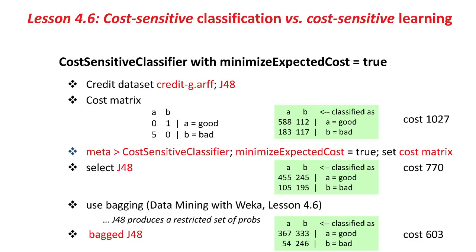Actually, J48 is not very good at producing probabilities, and it's advantageous to use bagging. We talked about bagging in data mining with Weka Lesson 4.6, because J48 produces a restricted set of probabilities, but using the bagging technique enriches the set of probabilities produced. So if you just use bagged J48, I won't do this for you, but if you use that as a classifier, then you get a lower cost, a better confusion matrix with a cost of 603, or .603, because it's 1,000 instances.